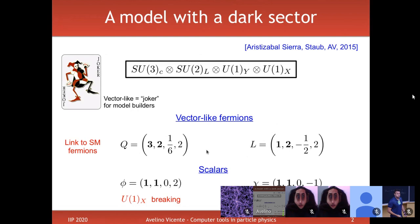For example, we have a field like the quark doublet of the standard model with exactly the same quantum numbers, but additionally charged under U(1)_X. Vector-like means the left-handed and right-handed components have exactly the same representation, so you are allowed to write a Dirac mass term in the Lagrangian because it is gauge invariant. We do the same for the leptons — vector-like lepton pairs with standard model quantum numbers plus a charge under U(1)_X.